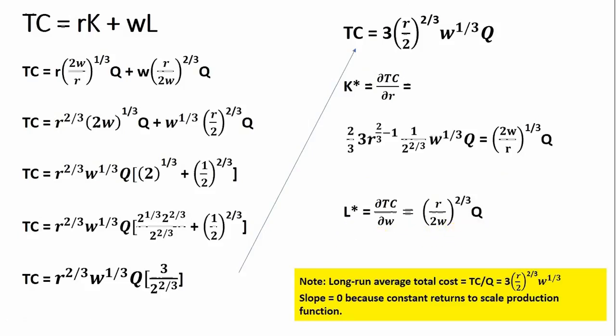Finally, to get the long-run average total cost, we take the total cost equation and divide through by Q, which leaves just a constant — slope of zero, a horizontal curve. This shouldn't be surprising because we started with a production function with constant returns to scale, and constant returns to scale implies a horizontal long-run average total cost curve. I hope you found this video helpful.